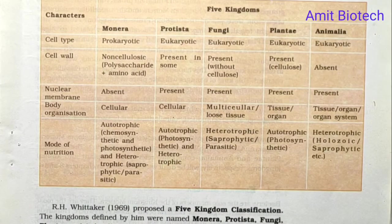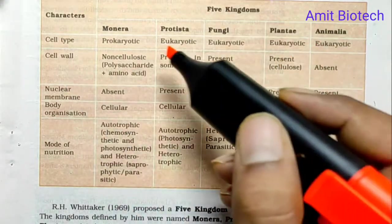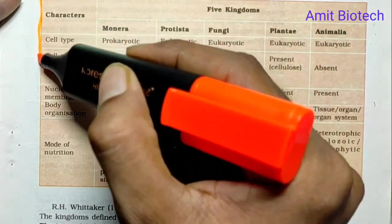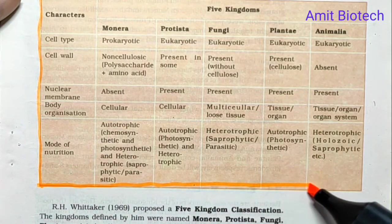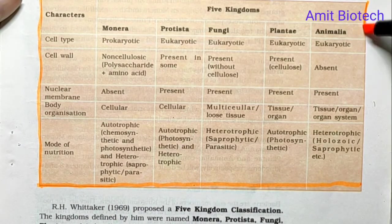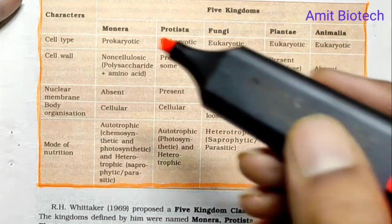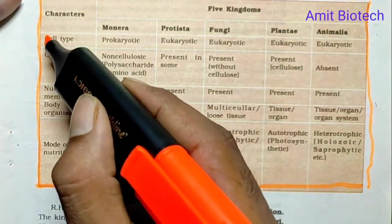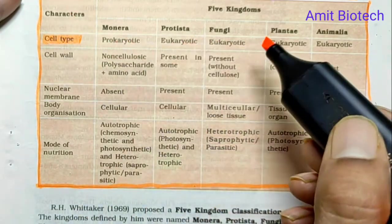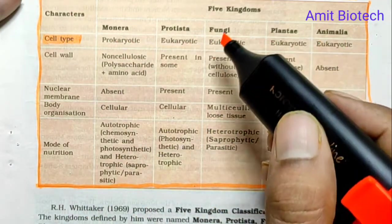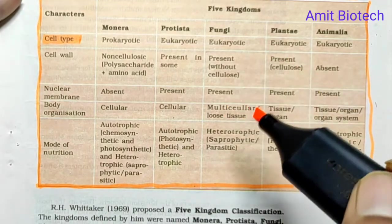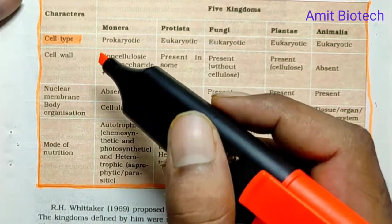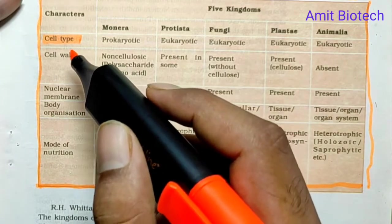Now let us look at an important chart. In the five-kingdom classification system, there are five kingdoms: Monera, Protista, Fungi, Plantae, and Animalia. This chart helps us compare the characteristics of each kingdom.